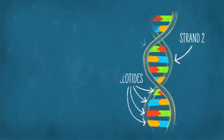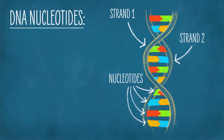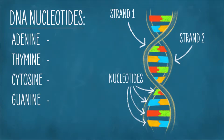DNA has two strands and is composed of little subunits called nucleotides. DNA is composed of four different types of nucleotides: adenine, thymine, cytosine, and guanine, often represented by the letters A, T, C,